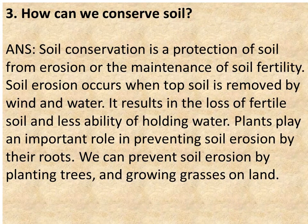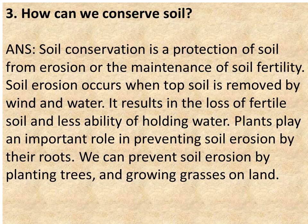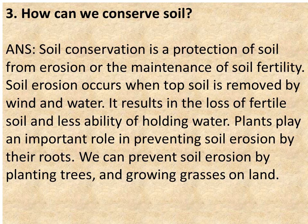Number 3: How can we conserve soil? Answer: Soil conservation is a protection of soil from erosion or the maintenance of soil fertility. Soil erosion occurs when topsoil is removed by wind and water, resulting in the loss of fertile soil and less ability of holding water. Plants play an important role in preventing soil erosion by their roots. We can prevent soil erosion by planting trees and growing grasses on land, and that is how we can conserve soil.